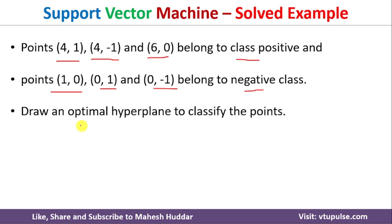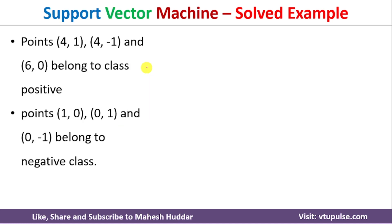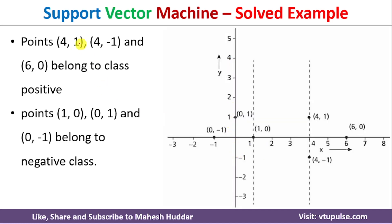Given this dataset, we need to draw an optimal hyperplane to classify these data points. First, we will mark these data points on a 2D graph. The first data point (4,1) is marked here, the second (4,-1) is marked here, and the third (6,0) is marked here. For negative examples: (1,0) is marked here, (0,1) is marked here, and (0,-1) is marked here.